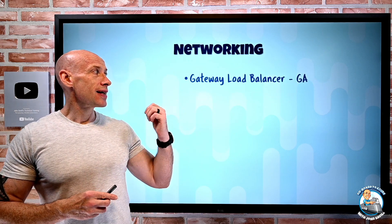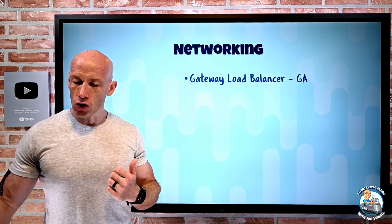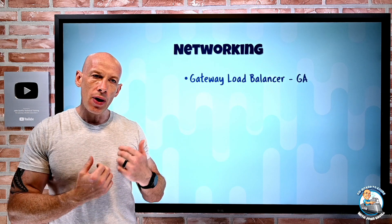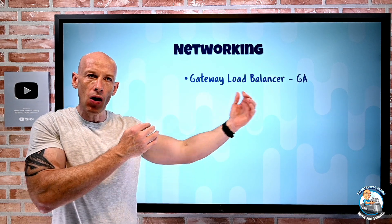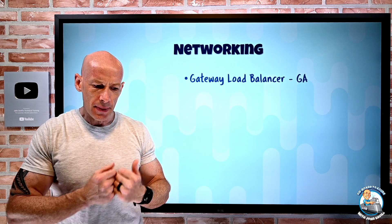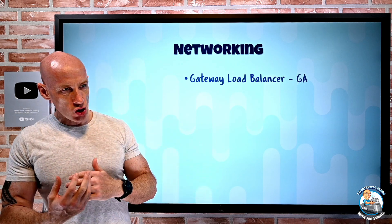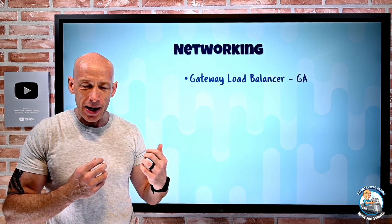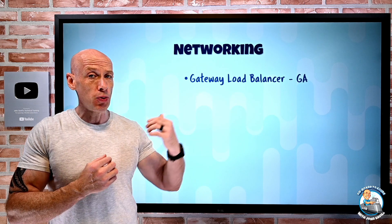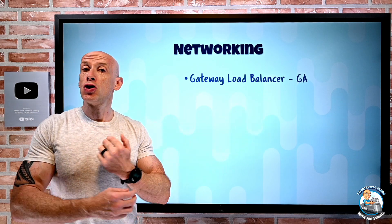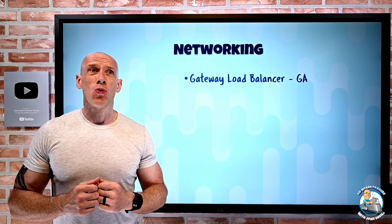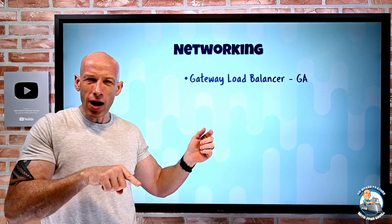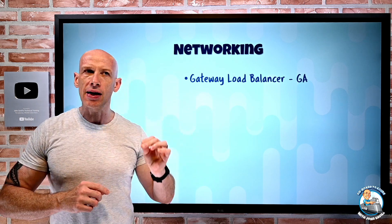On the networking side, the gateway load balancer has gone GA. Many times you'll have some service running and you want to add a network virtual appliance as part of the data flow — maybe a firewall, monitoring, traffic analytics, low-level DDoS protection, or traffic mirroring. And it's actually pretty painful to put something in the data path: you have to use user-defined routes, worry about multiple instances of whatever the NVA is, how the routing works, and how to keep it symmetric.